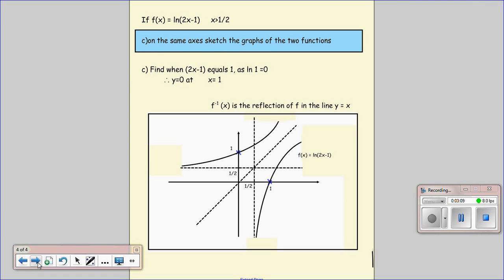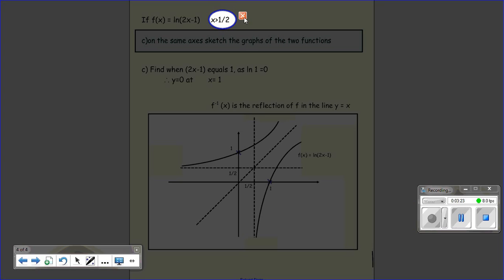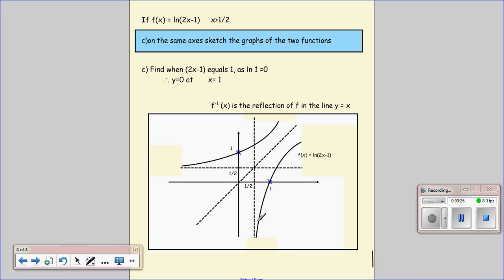Okay, so the final bit. On the same axis, sketch the graphs of the two functions. I'll start off by looking at this one here, which is the function we were given. We know that x has to be bigger than a half. So first of all, we can draw this line here. And we know that we can only have our x values this side of the line.